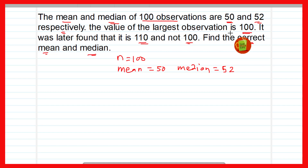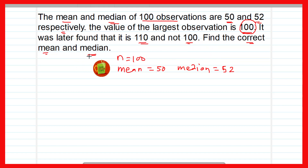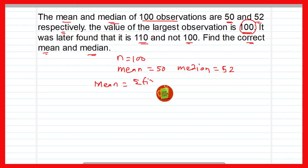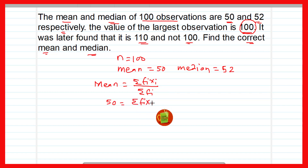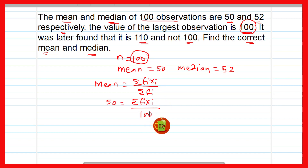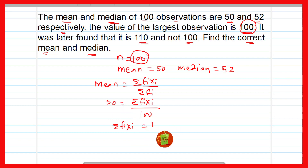The value of the largest observation is 100 but later it was found to be 110. We know the formula: mean = Σfixi / Σfi. So 50 = Σfixi / 100, therefore Σfixi = 100 × 50 = 5000.